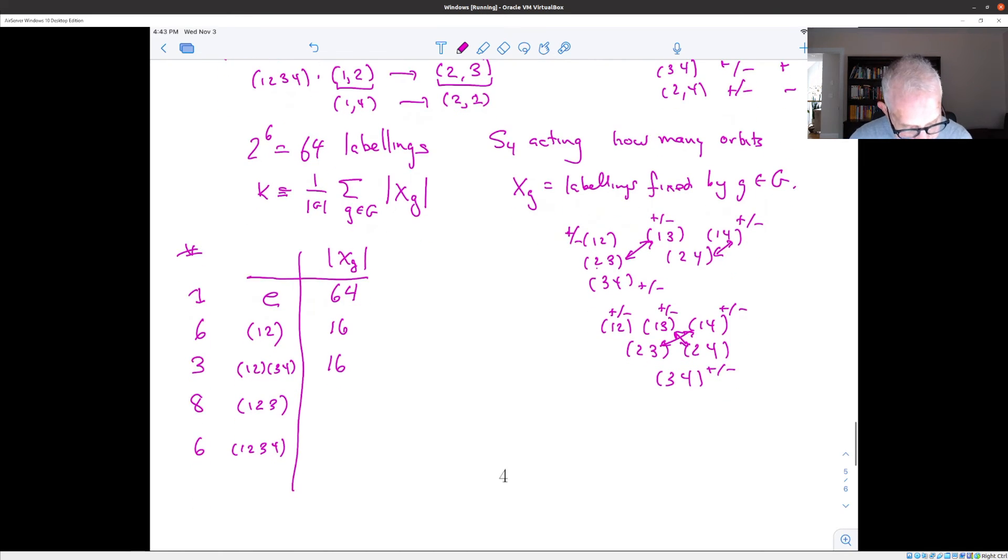What about a 3 cycle? Well, for a 3 cycle, how does 123 act? Well, it takes 12 to, 1 goes, 12 goes to 23. 23, 2 goes to 3, but 3 goes to 1. So 23 goes to 31, which is the same as 13. And 13 goes to 21. So these 3 edges go in a cycle.